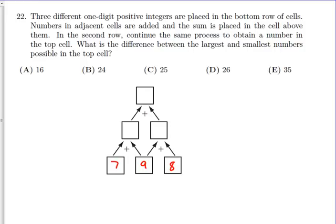We place those in the three boxes, putting the 9 in the middle because it's counted twice and we want the most amount. Now we do the arithmetic: 7 plus 9 is 16, 9 plus 8 is 17, and 16 plus 17 is 33.